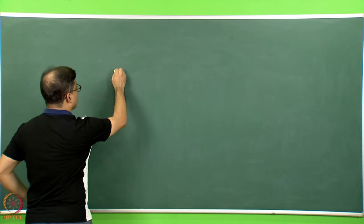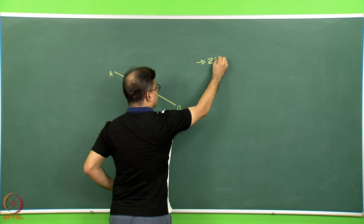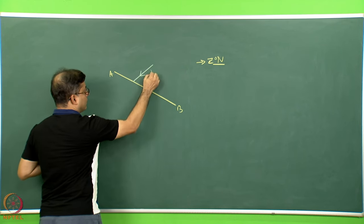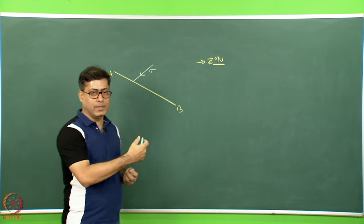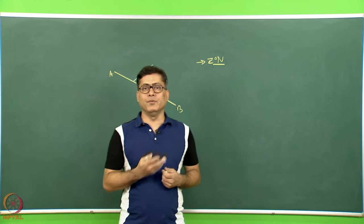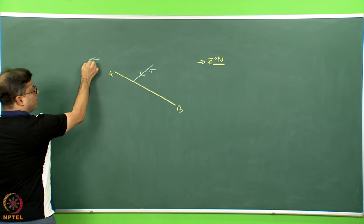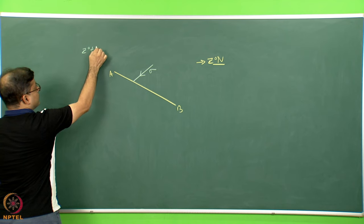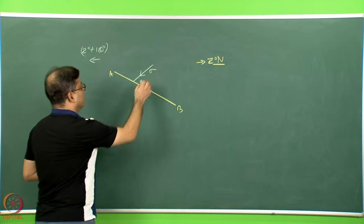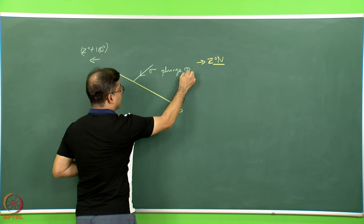Plane AB has a dip direction of z degrees measured clockwise from north. Here is the line of action of stress sigma — note the downside of this line is in a certain direction, so its trend is z° + 180°. The line of action of stress has a plunge of phi_2, whereas the plane has a dip amount of theta.